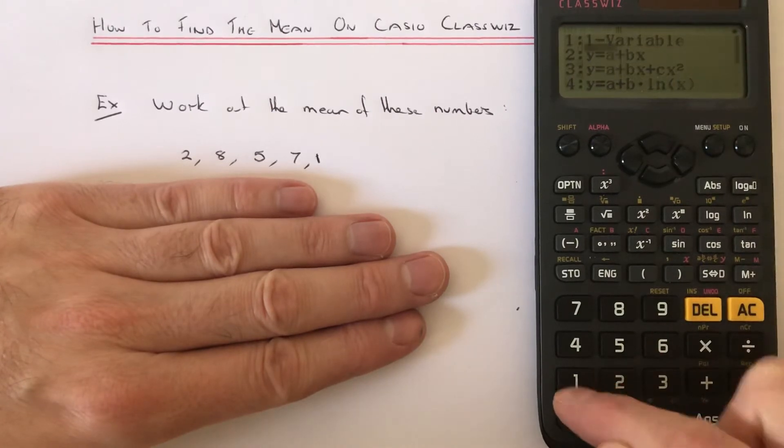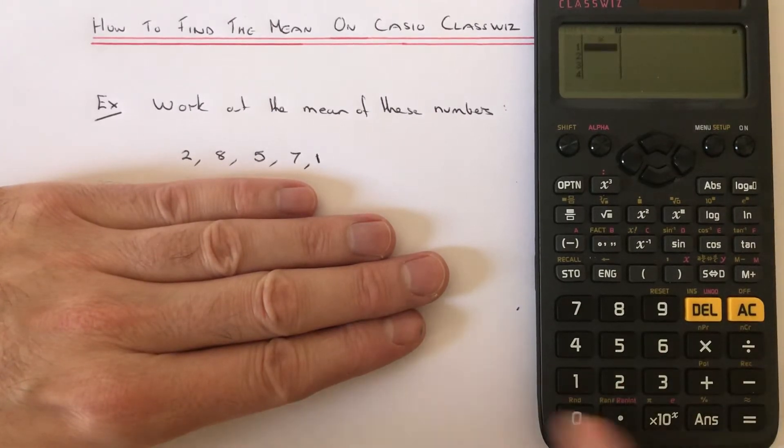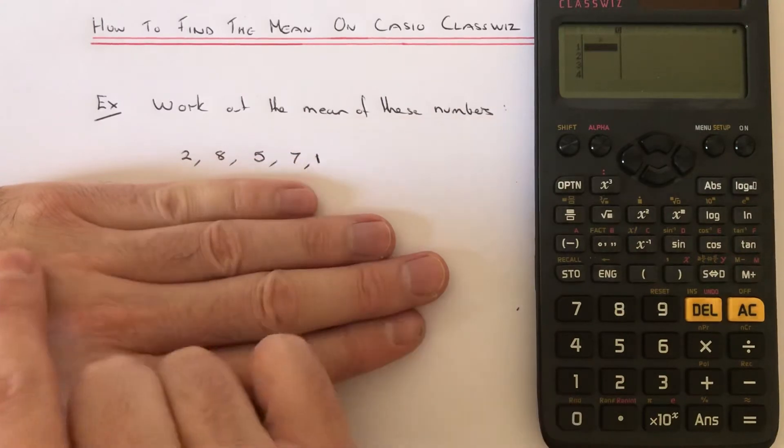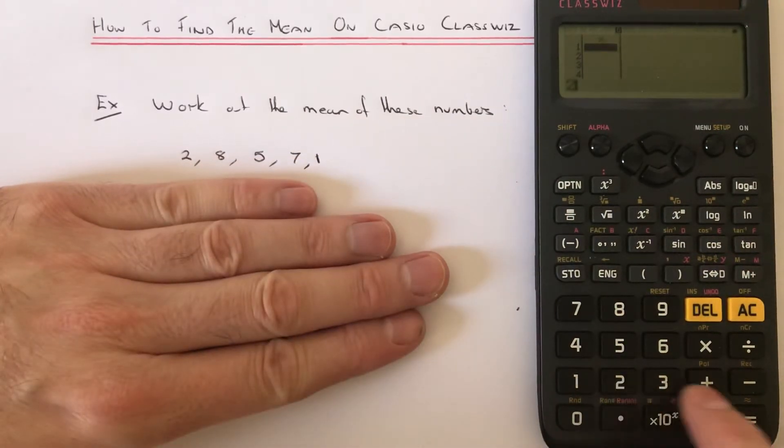We just need to type these numbers in. So we've got two, eight, five, seven, and one.